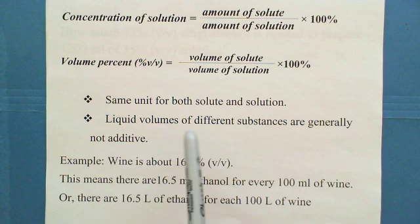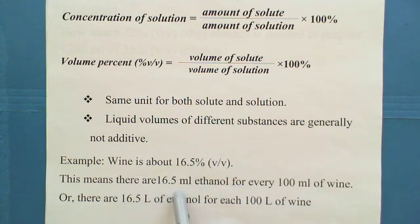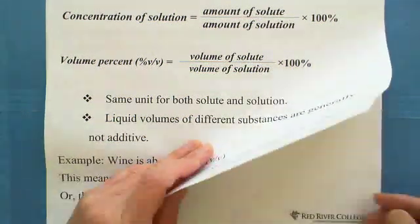For volume percent, we can say for example, wine is about 16.5%. That means there are 16.5 milliliters ethanol for every 100 milliliters of wine. So let's look at the question, Question 1.